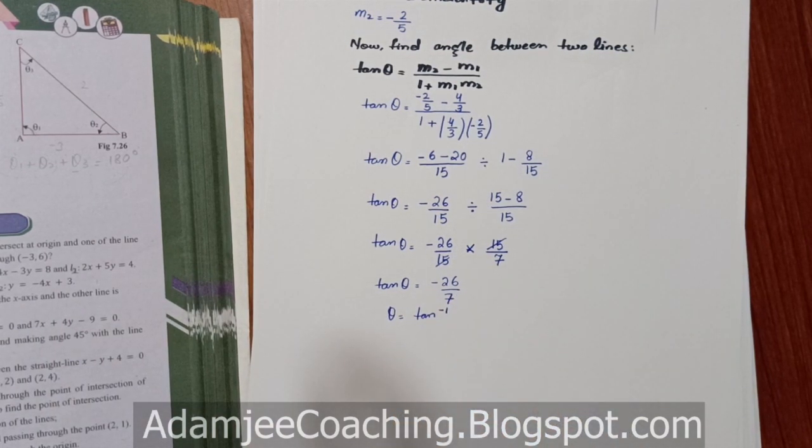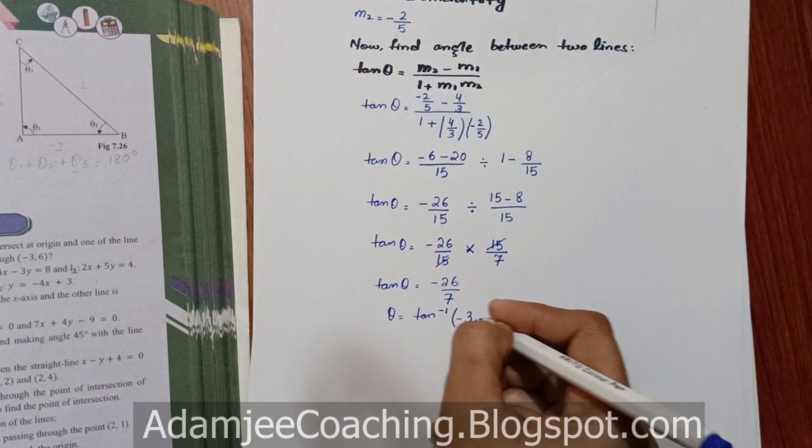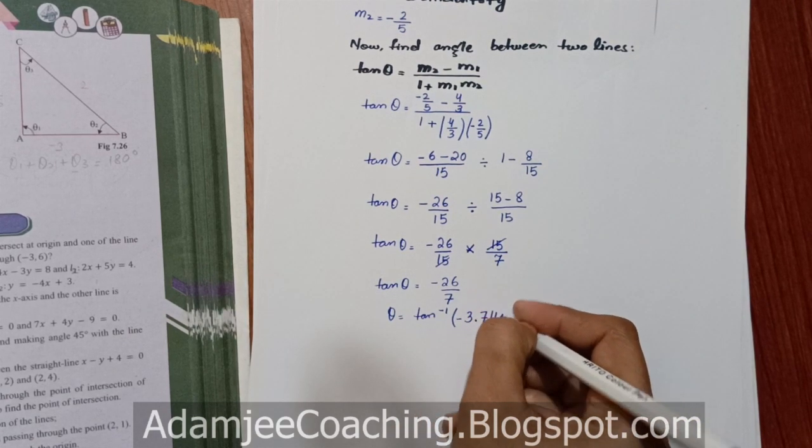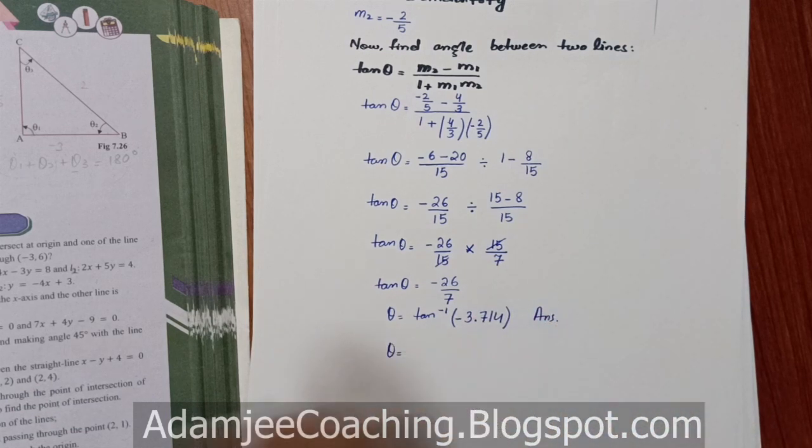Tan theta equals to minus 26 divided by 7. Theta yahi raha, tan wahan jaake tan inverse ho gaya. Aur 26 divided by 7 karen to 26 divided by 7. Yeh kya hai 3.714.